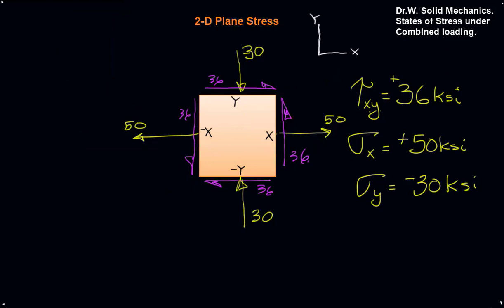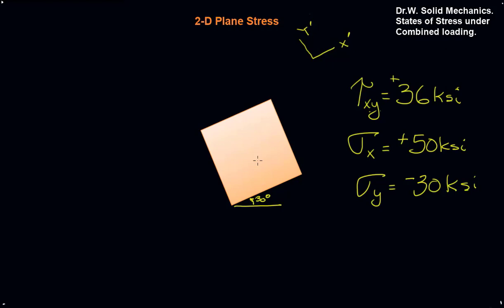As an engineering designer, we're often designing for the maximum tensile stress, maximum compressive stress, or maximum shearing stress. We need to know the peaks of these values to design accordingly. But how do we know the peak values occur when our x-y frame is aligned as given? Who's to say that the x-y axes we arbitrarily choose represent the maximum and minimum values?